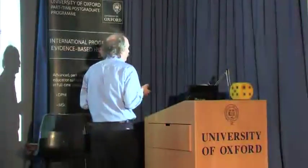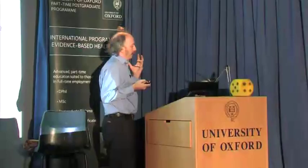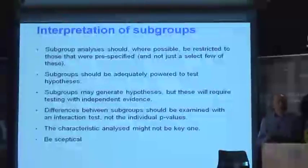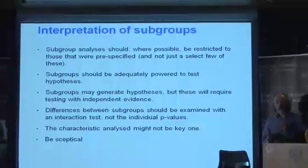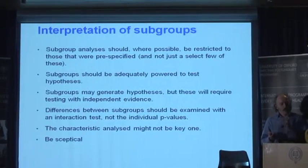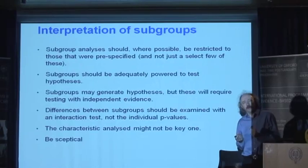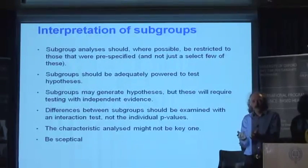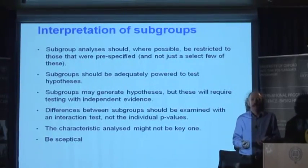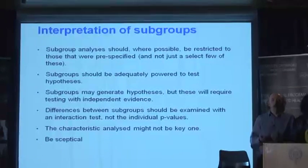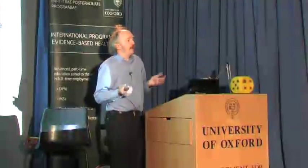So, to sum up: subgroup analyses should, where possible, be restricted to pre-specified — not just a select few. The subgroups should be adequately powered to test their hypotheses. We should not be embarking on subgroup analyses where we actually can't test what we think — they're not powerful enough.